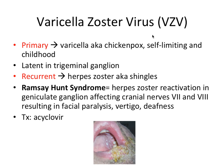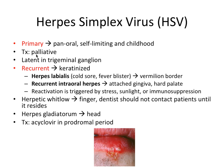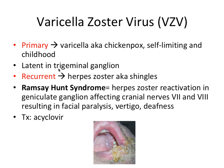Next we have varicella zoster virus, which is technically another type of herpes virus. It also has several different manifestations. The primary infection — the first time you get this virus — is called varicella, also known as chickenpox, which is very common, also self-limiting, and also in childhood. Again it lays dormant in the trigeminal ganglion, and if reactivated by stress, sunlight, or immunosuppression, it can return as a recurrent infection known as herpes zoster, or more commonly shingles. The virus's name shares both manifestations: the primary varicella and the recurrent zoster.